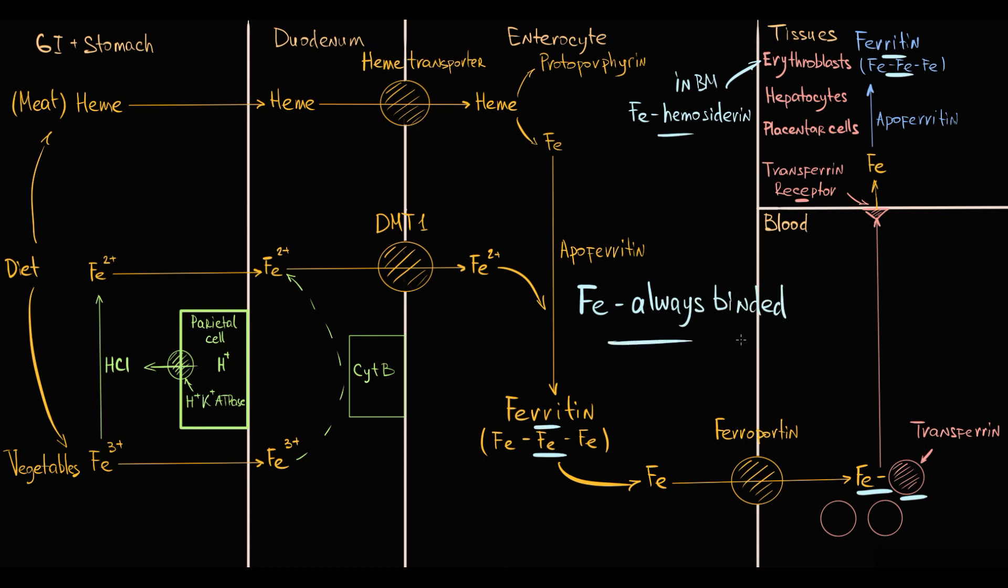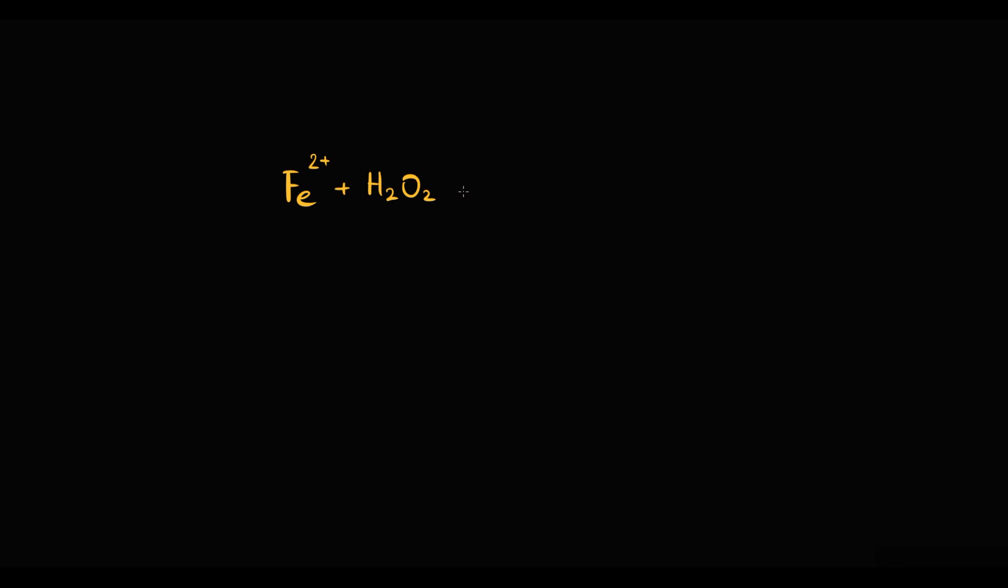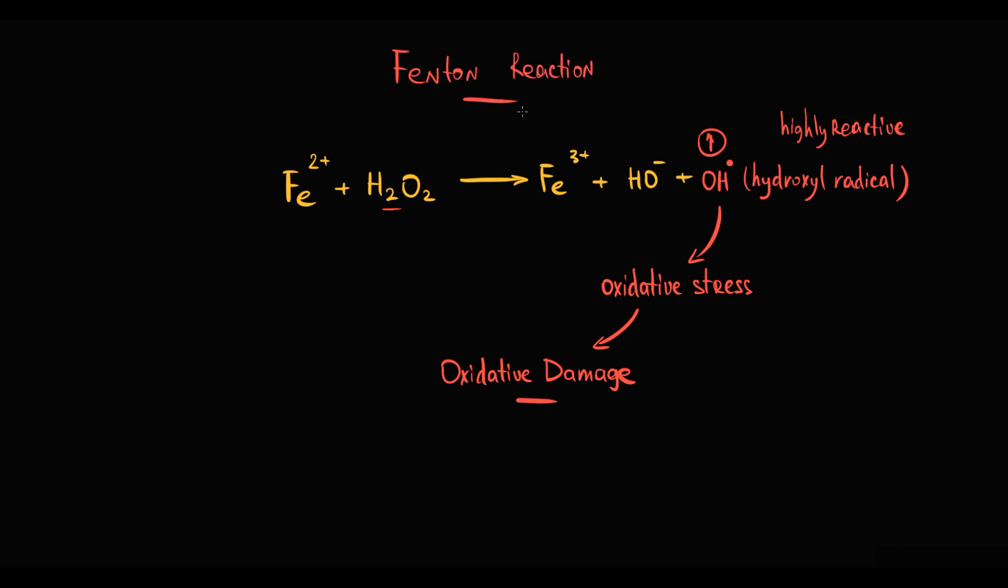And the reason is that free iron is a really dangerous substance. Ferrous iron, which is iron with plus 2 charge, can induce oxidation of hydrogen peroxide that results in formation of ferric iron with plus 3 charge, hydroxide anion, and most important, hydroxyl radical is produced. Hydroxyl radical is a highly reactive free radical which is much more dangerous than hydrogen peroxide, for example. And accumulation of hydroxyl radicals will cause oxidative stress that results in severe oxidative damage. This reaction is called Fenton reaction, and exactly this feature makes free iron so dangerous. So to prevent this in our organism, iron is always bound to proteins.